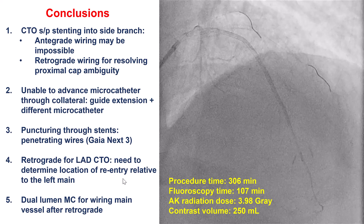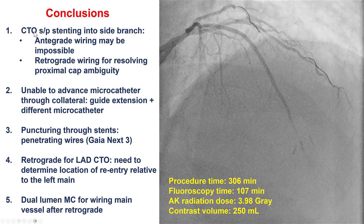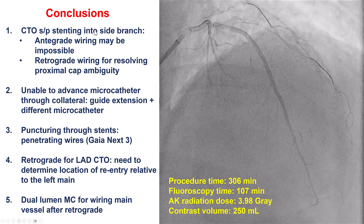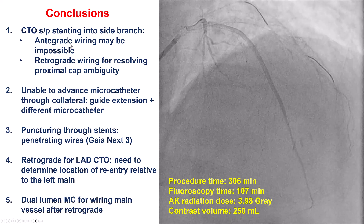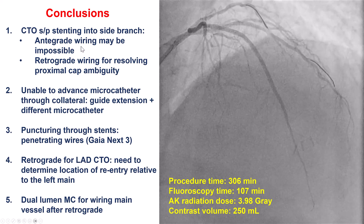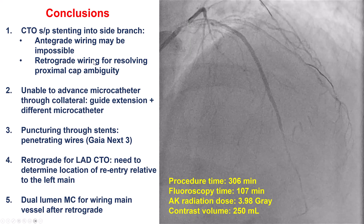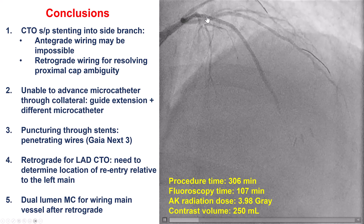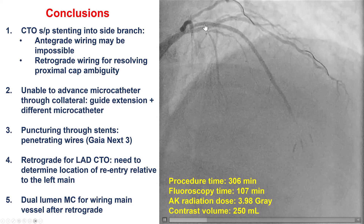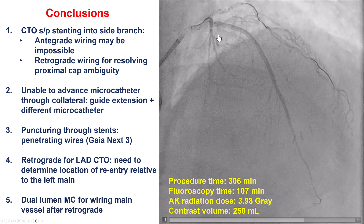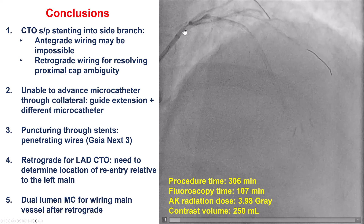So, several lessons from this case. The first one is when we have a CTO with a proximal cap that is jailed by a stent placed into a side branch, this can make antegrade wiring extremely challenging or impossible. Retrograde is important, first of all, to understand where the vessel comes from. In this case, there was a misunderstanding — we thought the vessel might be a continuation of the septal branch, but the reality was that the LAD was taking a completely different course.